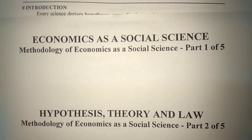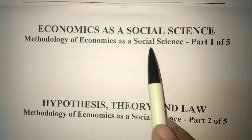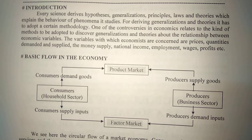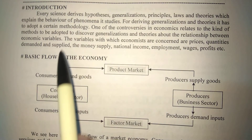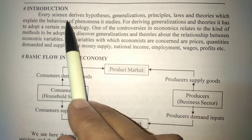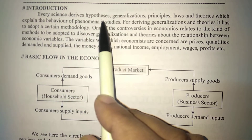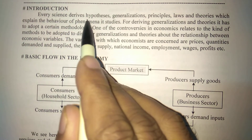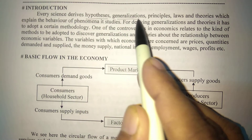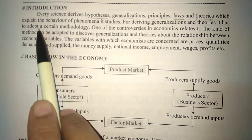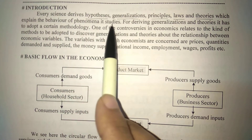This is Part 1, where we will discuss economics as a social science. Every science — whether physics, chemistry, biology, or economics — derives hypothesis, generalizations, principles, laws and theories which explain the behavior of phenomena it studies.